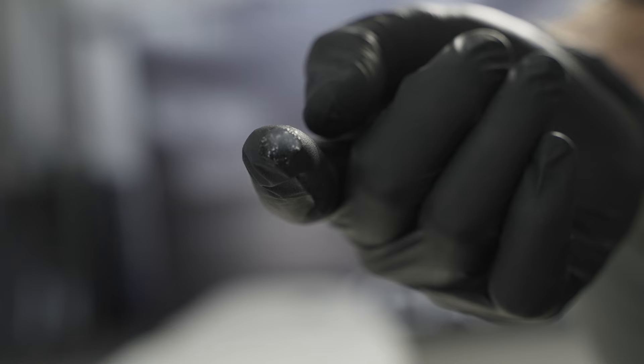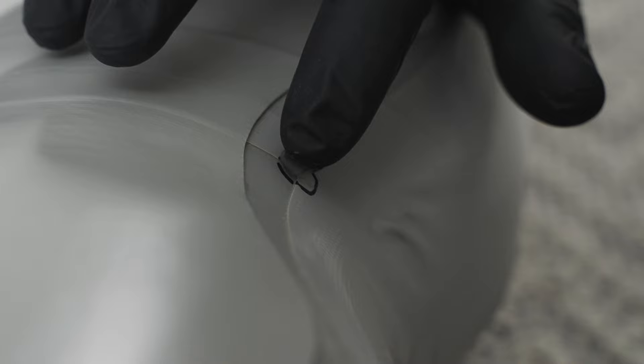Next take a small dab of aquaseal and apply it to the leak. We like to spread the sealant around to ensure it stops the leak.